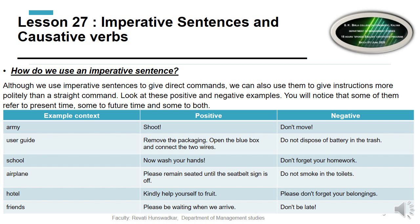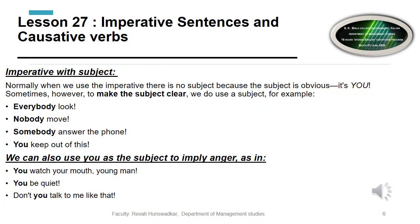Negative command: 'Don't forget your homework.' Airplane — instruction: 'Please remain seated until the seatbelt sign is off.' Command: 'Don't smoke in the toilet.' These are examples where imperative sentences are used in the form of commands or instructions.